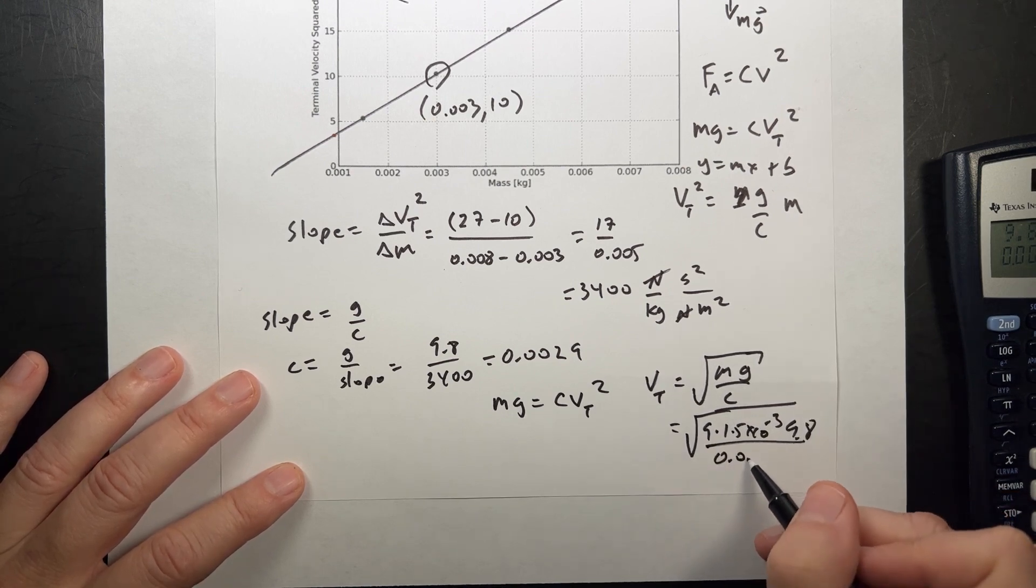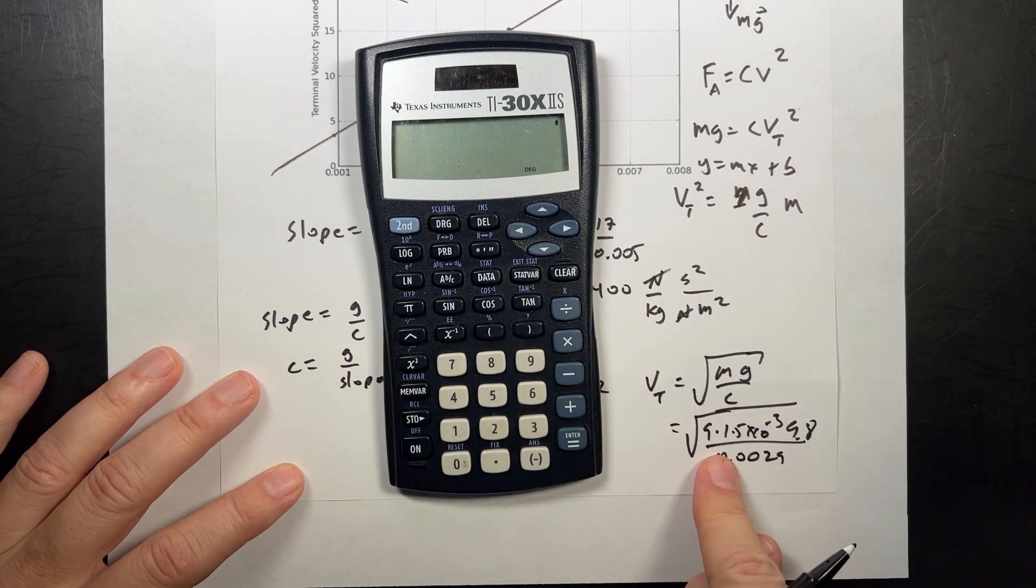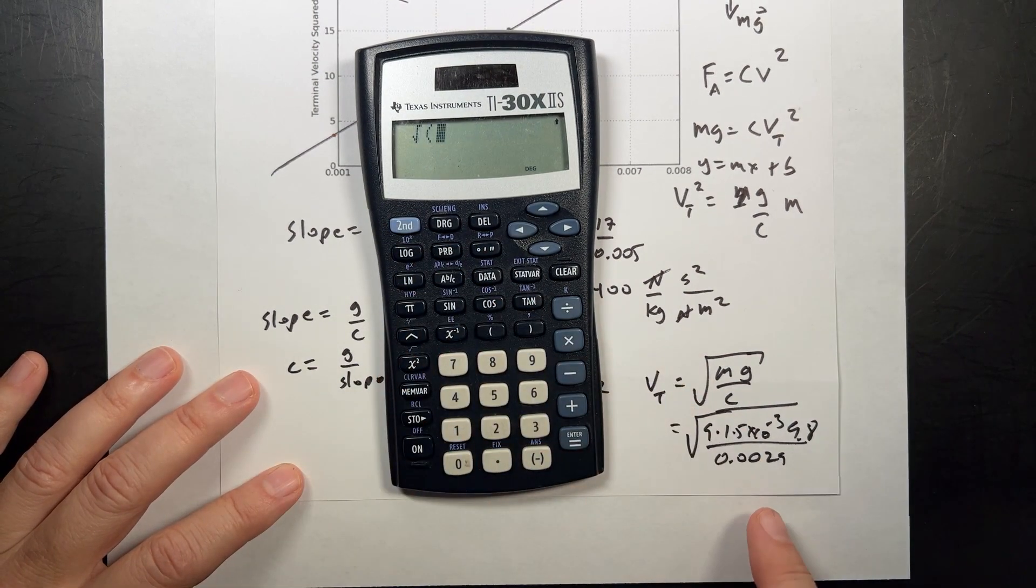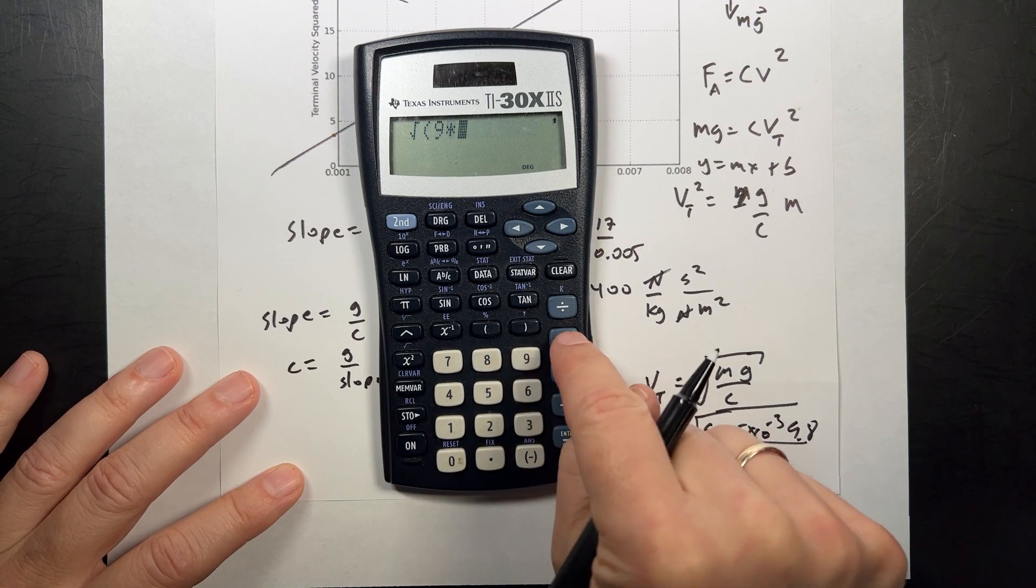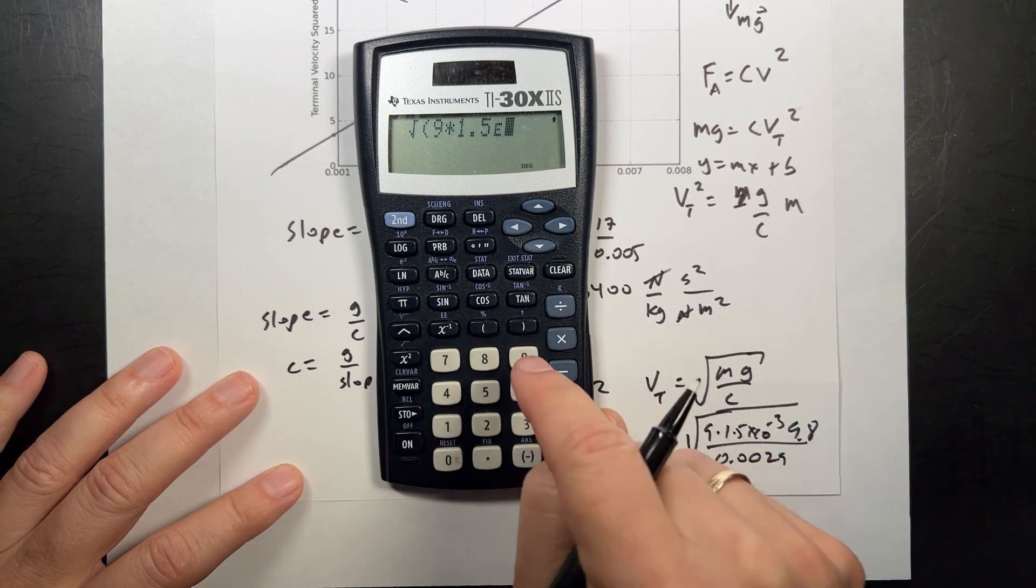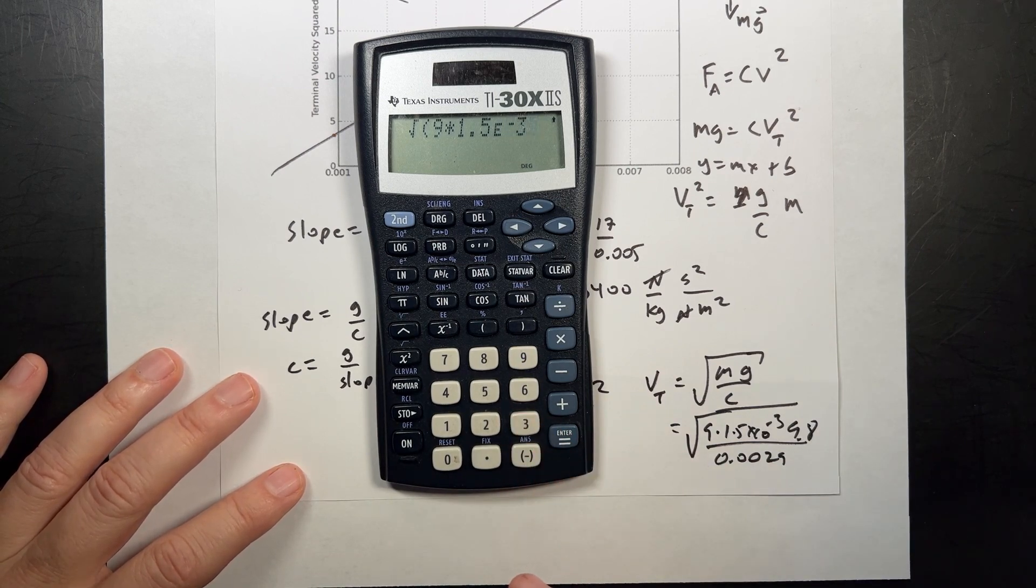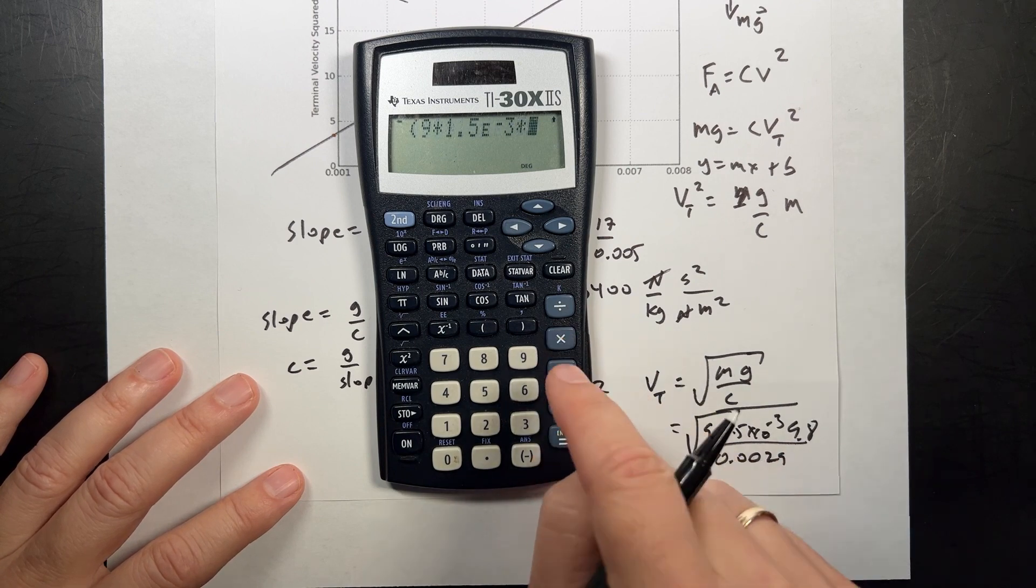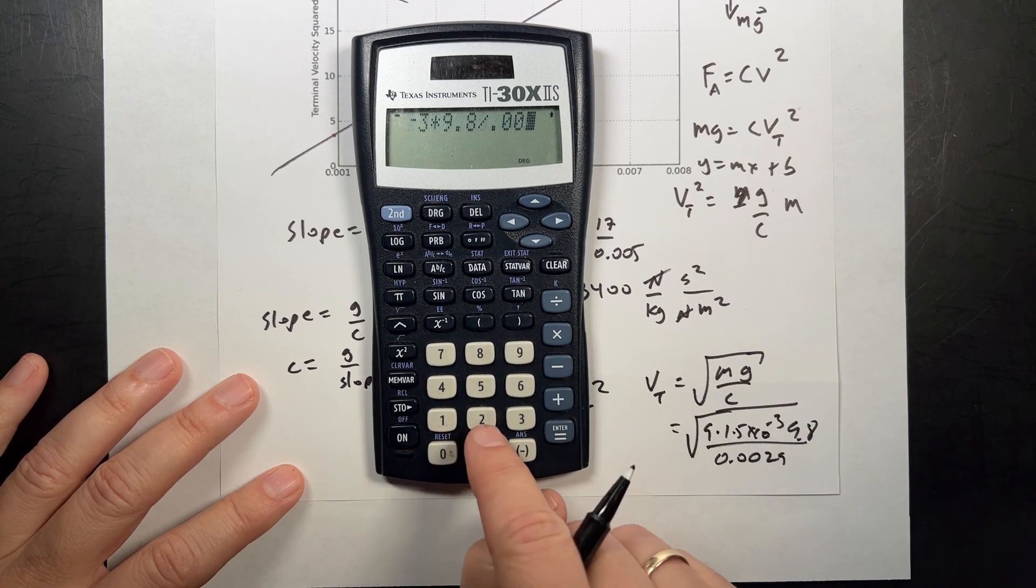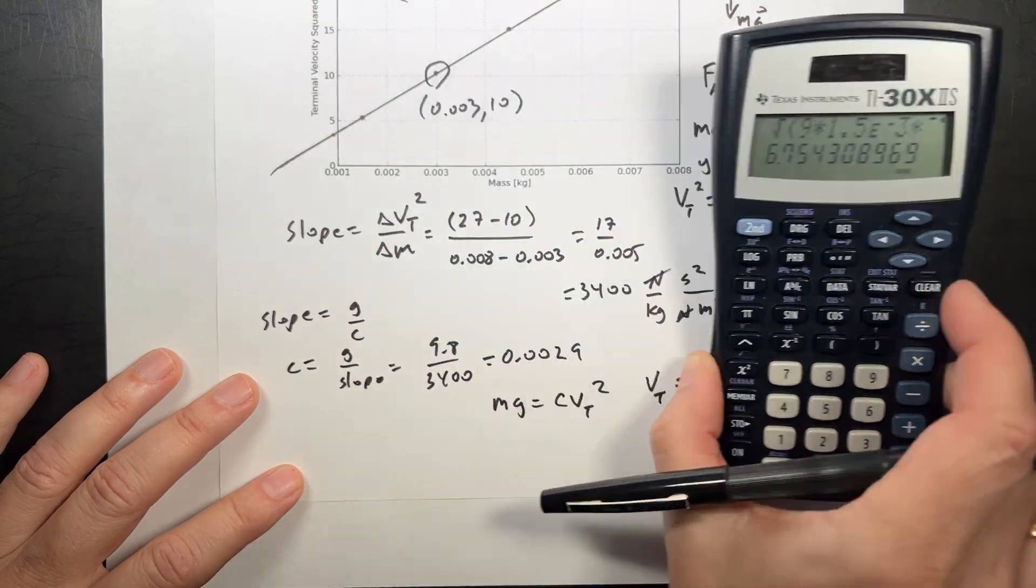And then c of 0.0029. So let's put that in our calculator. So clear, I'm going to get the square root 9 times 1.5 times 10 to the negative third. That's 1.5 grams in kilograms times 9.8 divided by 0.0029 close parentheses equals. And I get 6.75.